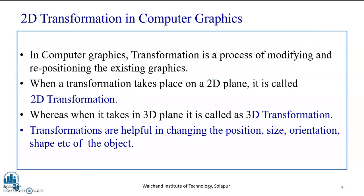So, what is transformation? In computer graphics, transformation is a process of modifying and repositioning the existing graphic. When a transformation takes place on a 2D plane, it is called as 2D transformation. Whereas, when it takes place in a three-dimensional plane, it is called as 3D transformation.